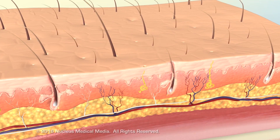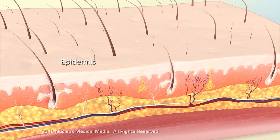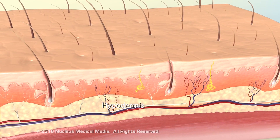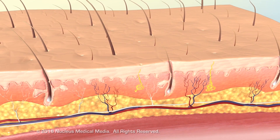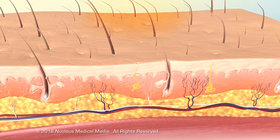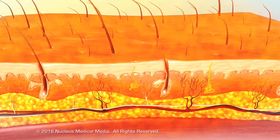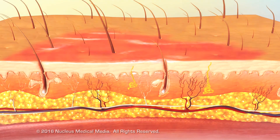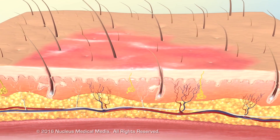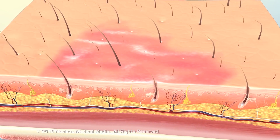The skin contains three main layers: the epidermis, dermis, and hypodermis, or subcutaneous. Burns are tissue injuries caused by heat, chemicals, electricity, radiation, extreme cold, or friction that disrupt the skin's framework and function.